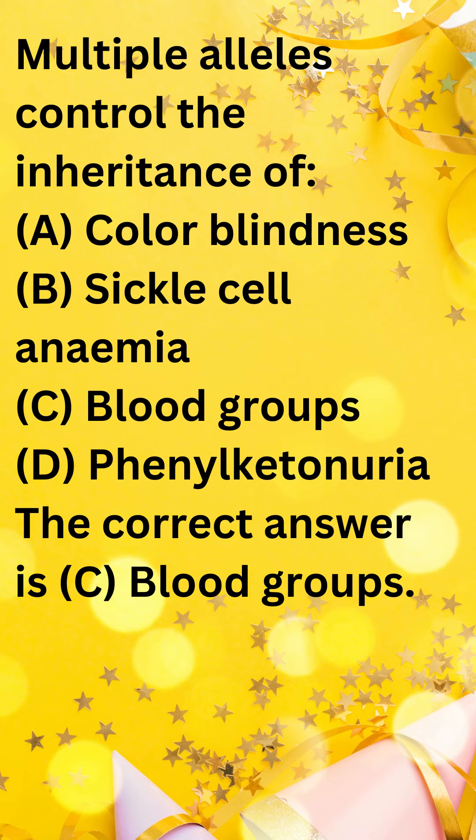Individuals can have two different alleles — AA, AB, BB, or BO — leading to four different blood groups: A, B, AB, and O.